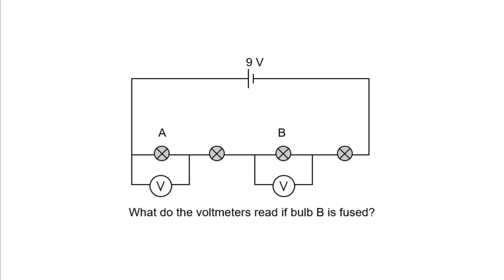Hello everyone, this is XM Puzzle. So we have four light bulbs connected in series with a 9 volt battery. What will be the voltmeter readings if bulb B is fused?